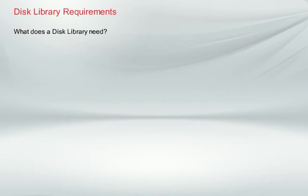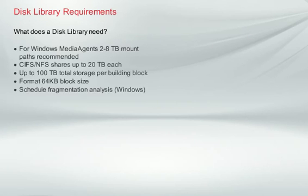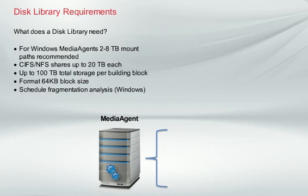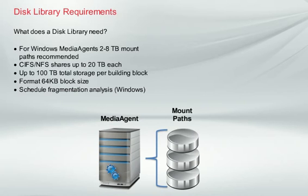You now have a good idea about the requirements for disks in a deduplication disk library, but there are also requirements for the library itself. In this graphic, we show a disk library with three mount paths. The mount paths within a disk library should be configured for between 2 and 8 terabytes, formatted to 64 kilobyte block size, and for disk libraries managed by Windows Media Agents, fragmentation analysis should be scheduled regularly.